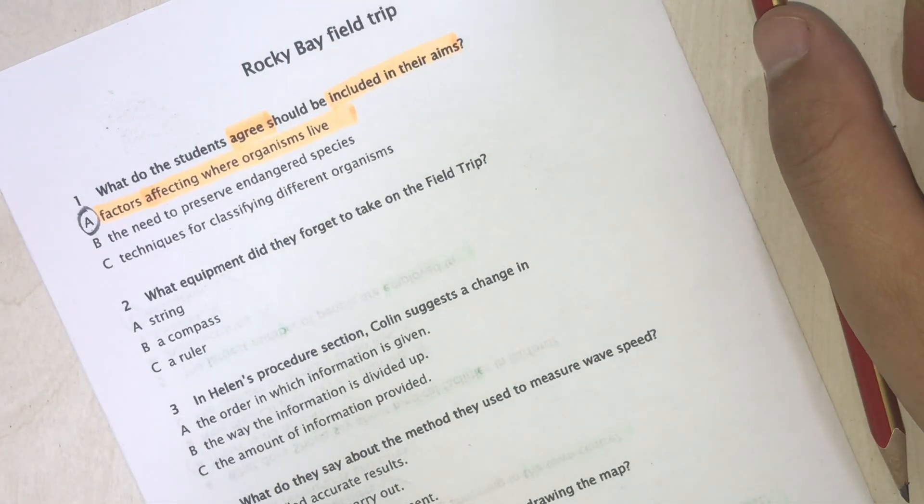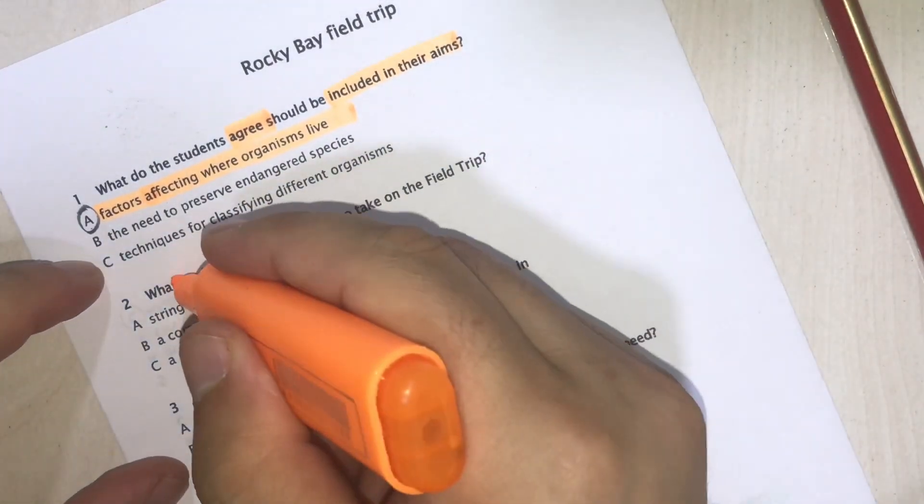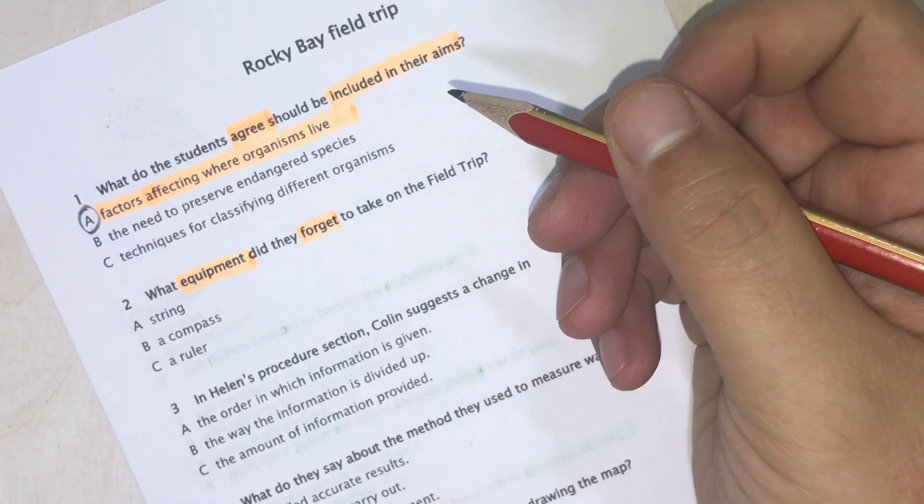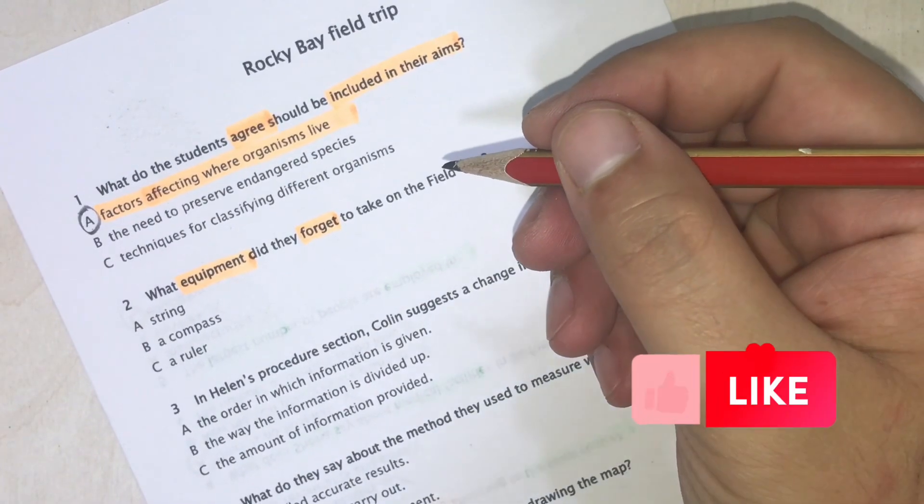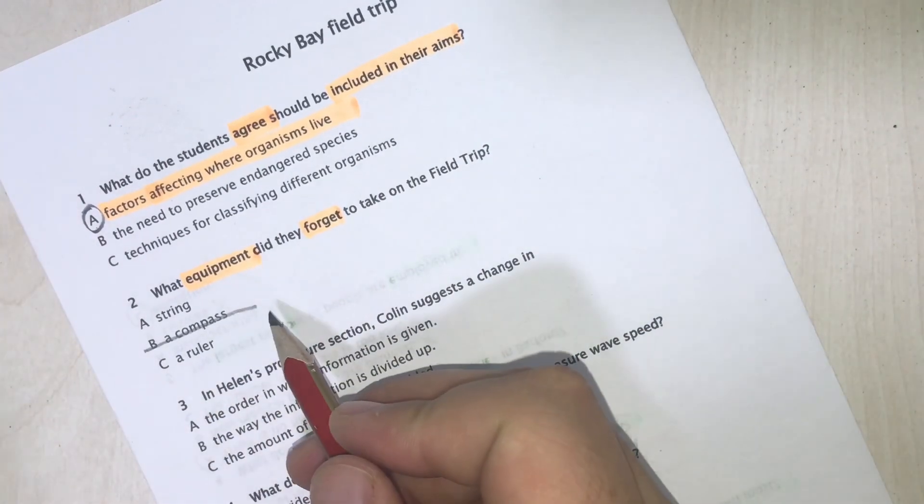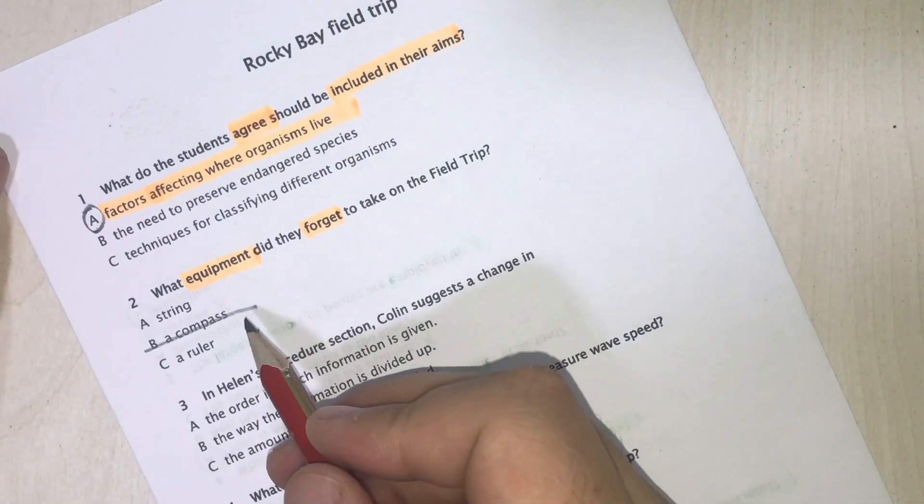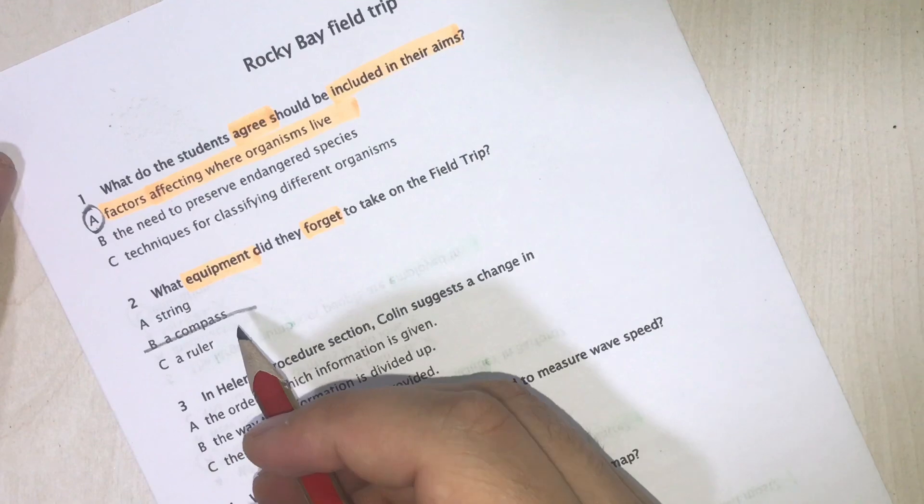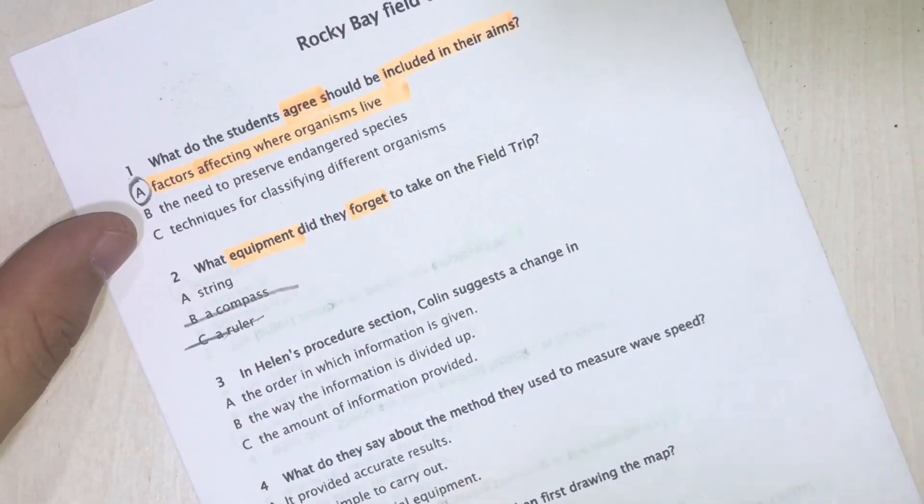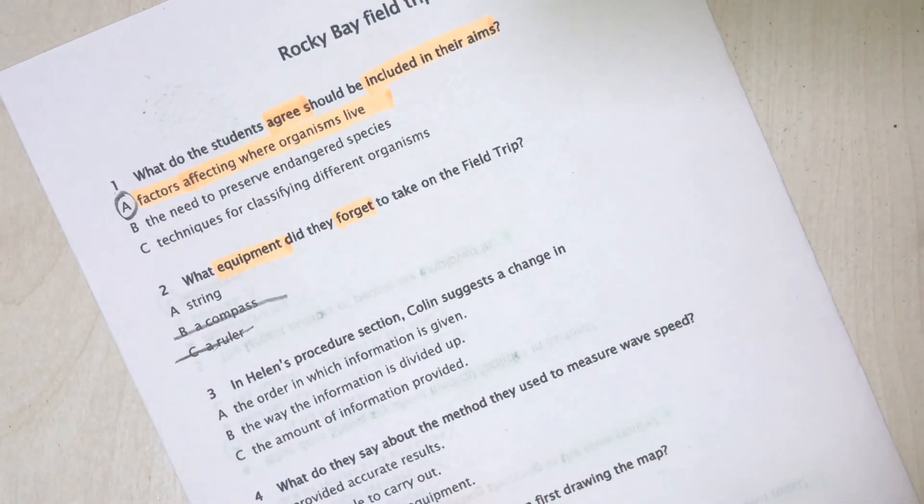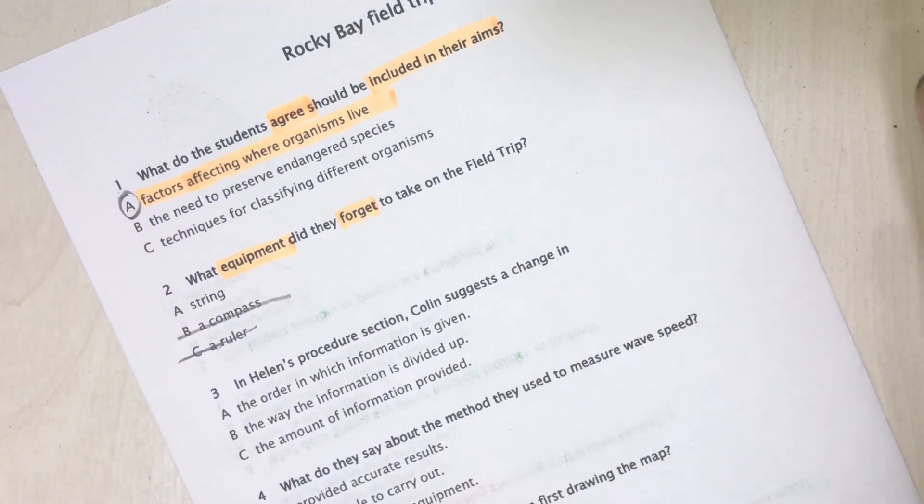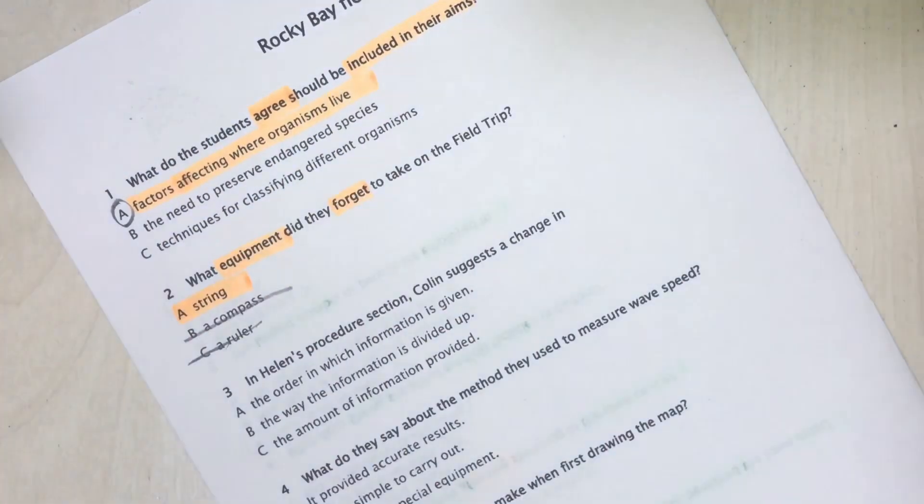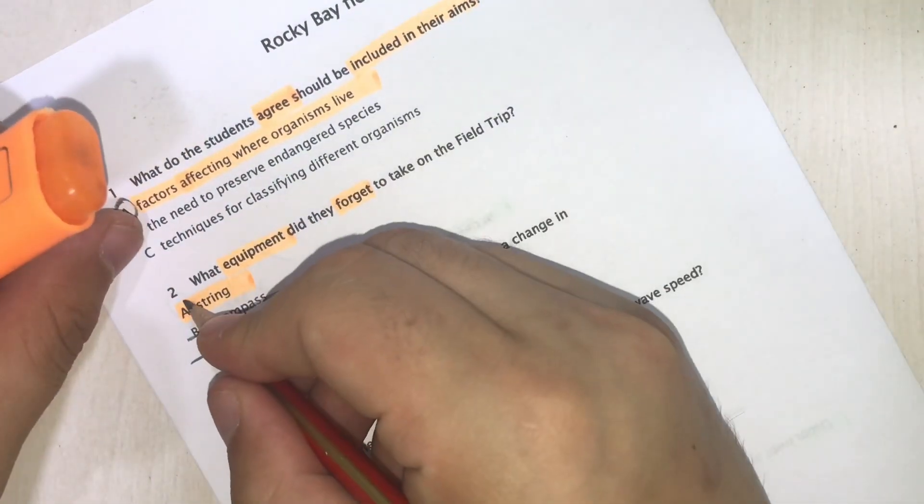Question 2: What equipment did they forget to take on the field trip? So we should find equipment that they forgot. Audio: 'We were measuring wind direction and we brought the compass for that, but not the piece of string to hold up in the air. Didn't Mr. Blake make a fuss about us leaving that behind? Anyway, it was easy to get one from another student.' So they forgot to bring a string. The answer is going to be A.